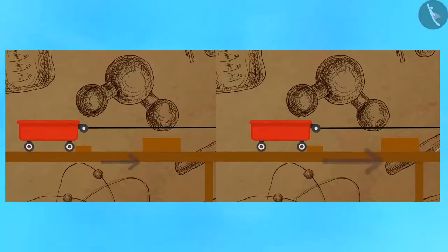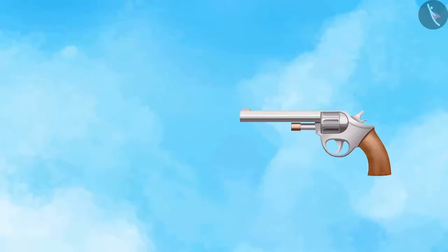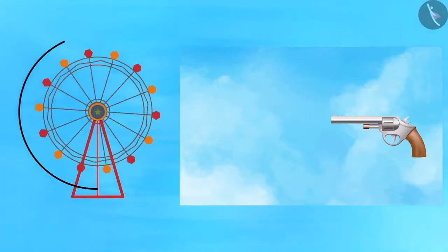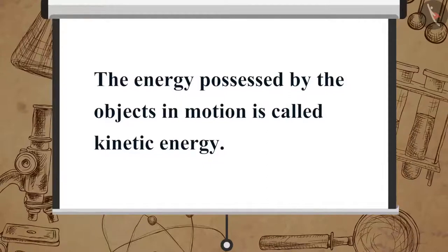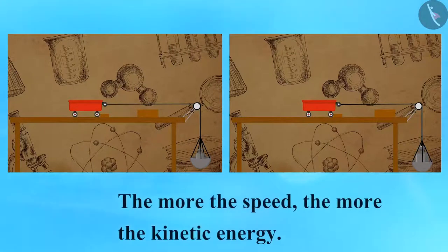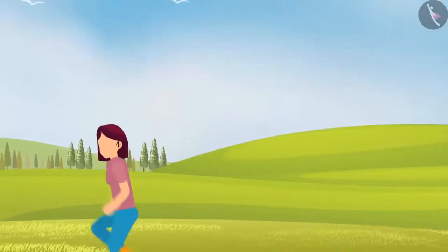The moving object is capable of doing work. A fast-moving object does more work than a relatively slow-moving object. Think of the rotating wheel or the bullet fired from a gun — both possess energy to do work. The energy possessed by objects in motion is called kinetic energy, defined as the energy possessed by an object by virtue of its motion. The more the speed, the more the kinetic energy. A speeding car, an athlete running, and a man swimming are a few more examples of kinetic energy.